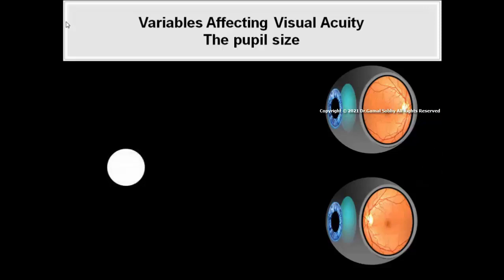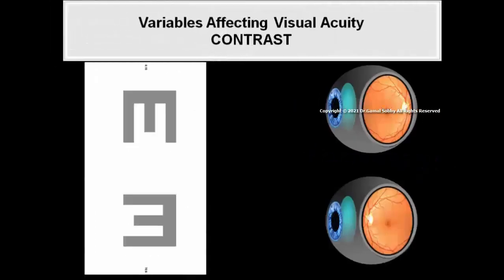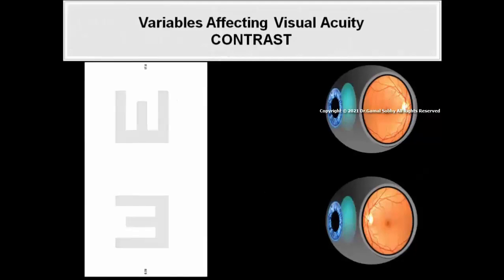7. A very narrow pupil reduces visual acuity by markedly reducing retinal illuminance and by increasing the effect of light diffraction. In general, the visual acuity decreases with reduction in objective contrast.